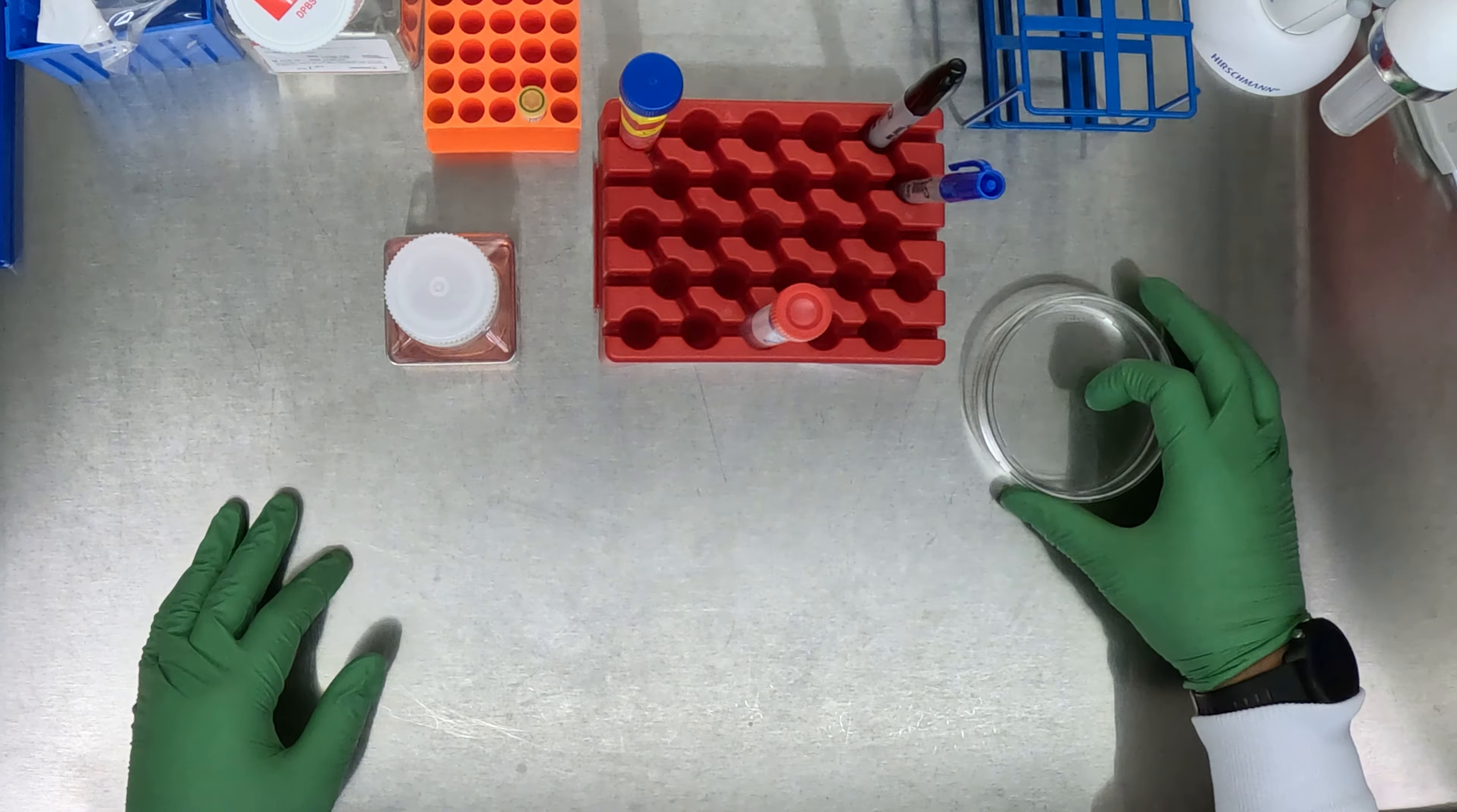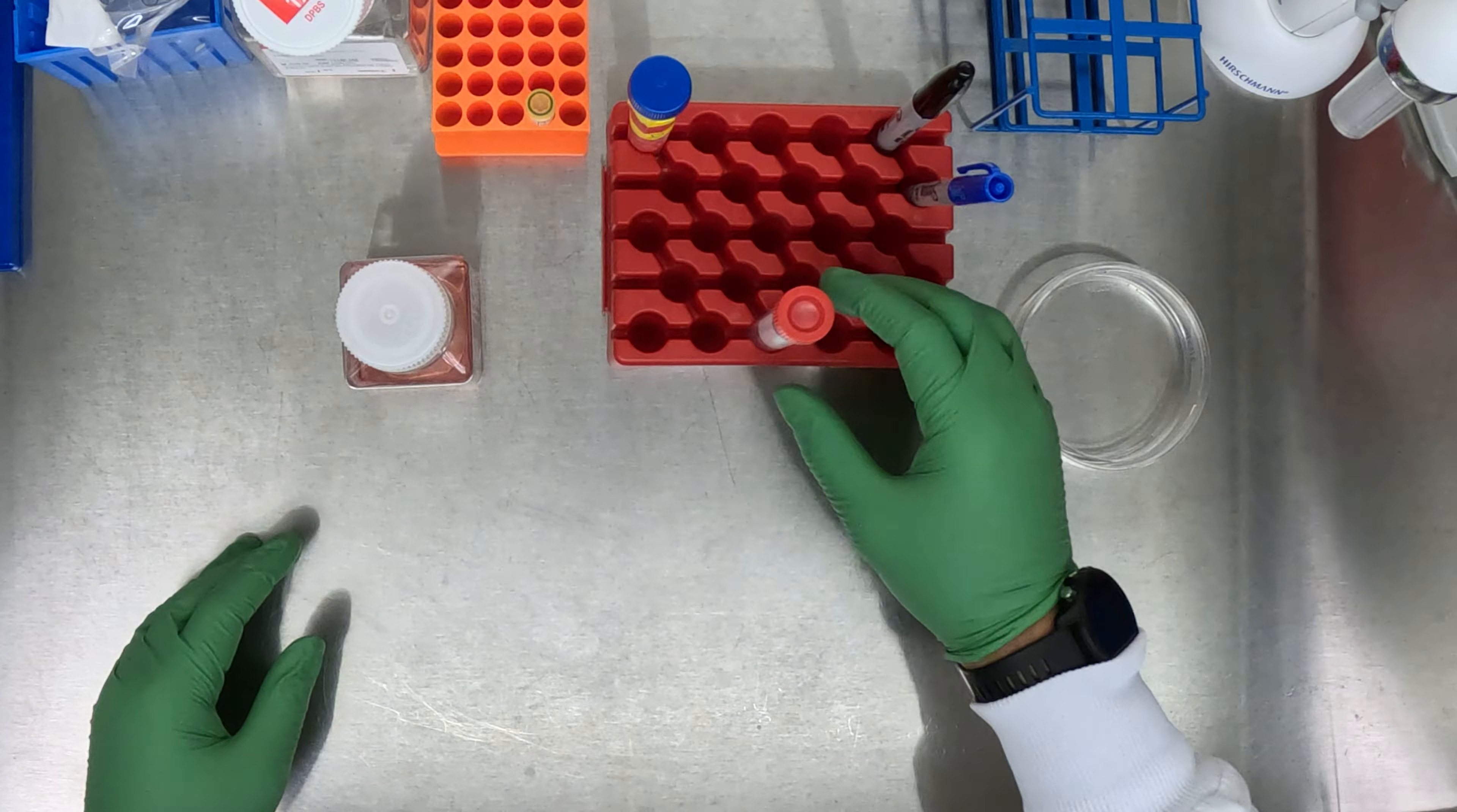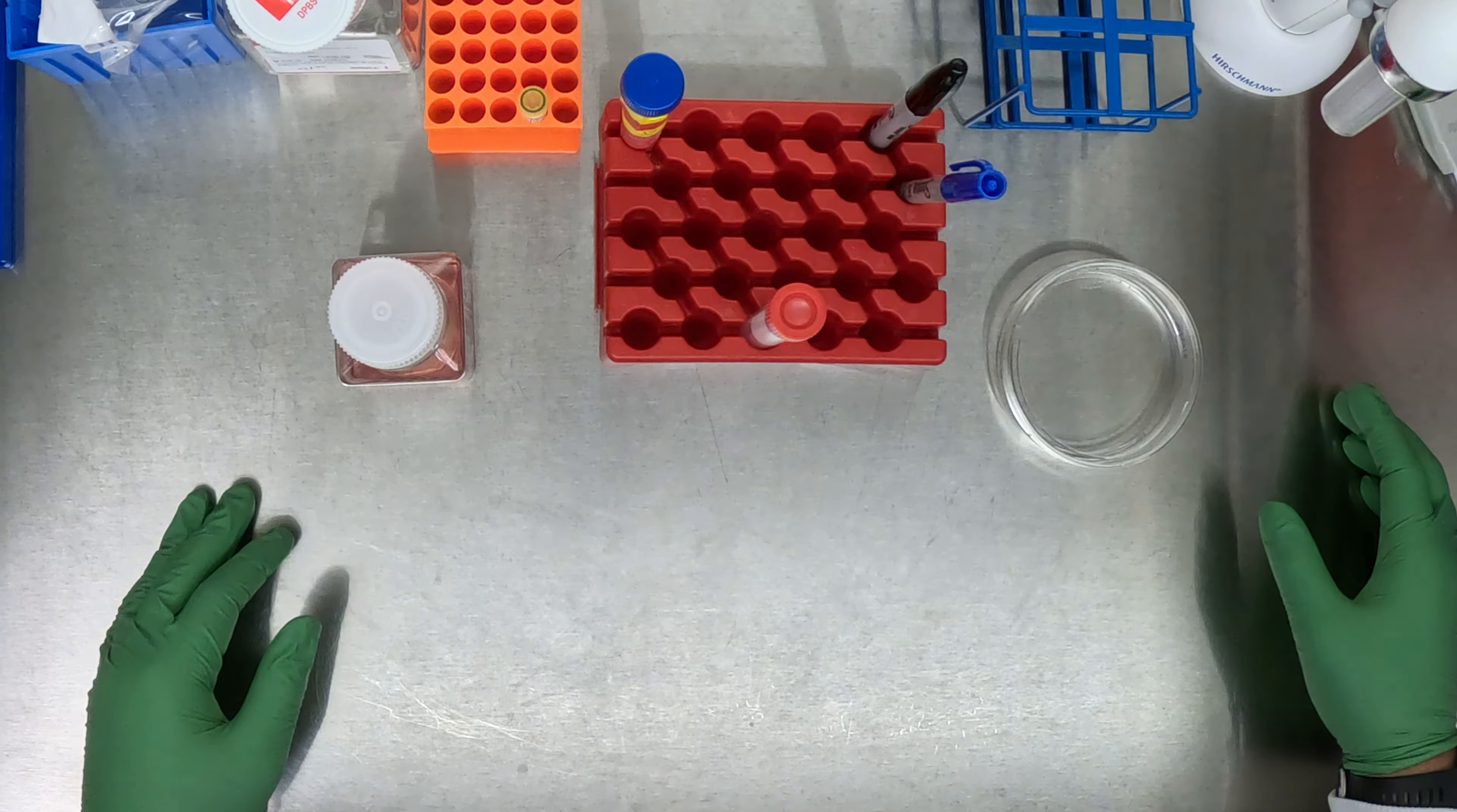First, we'll need a 10 centimeter matrigel coated dish to plate our cells after we've thawed them. We'll need M-teaser plus rock inhibitor, and we'll need a conical filled with 5 mLs of M-teaser and rock inhibitor to aliquot our cells into once the vial has thawed.